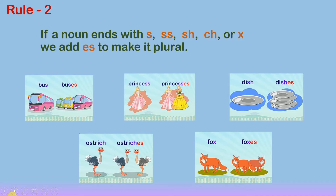Rule number two: if a noun ends with the letters s, ss, sh, ch, or x, we add 'es' to make it plural. For example, the word 'bus' ends with letter s, so to make its plural form, we add 'es' at the end — buses. Next example: 'princess' ends with letters ss, so we add 'es' — princesses.